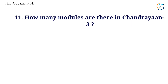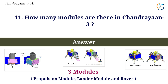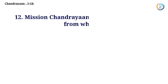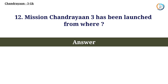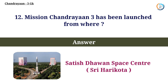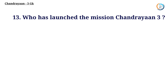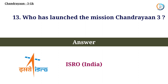How many modules are there in Chandrayaan-3? Answer: 3 modules. Mission Chandrayaan-3 has been launched from where? Answer: Sriharikota, India.